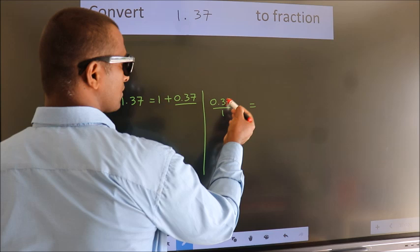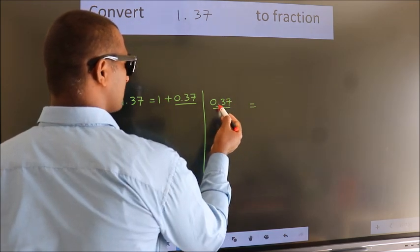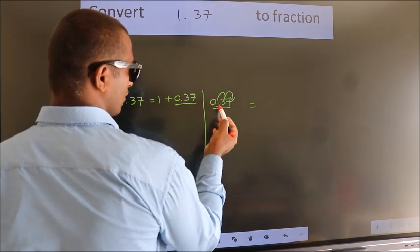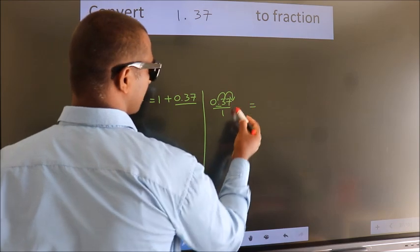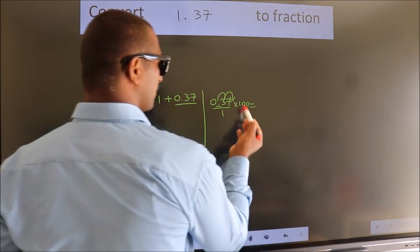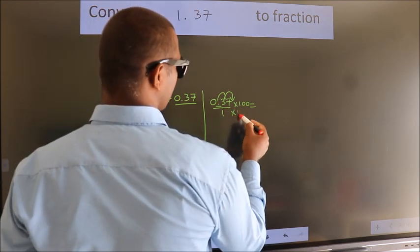for that we have to move this decimal after 1, 2 numbers. To move this decimal after 2 numbers, for that we should multiply it with 100. Whatever we are multiplying in the numerator, in the denominator also we should do the same.